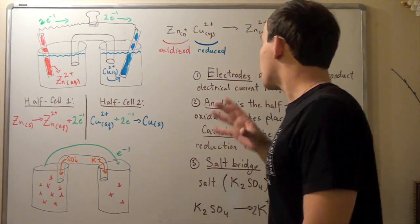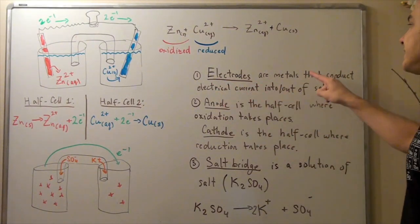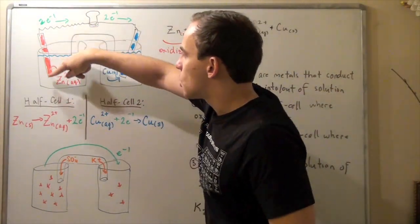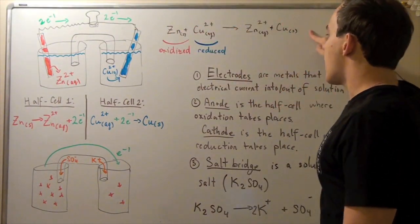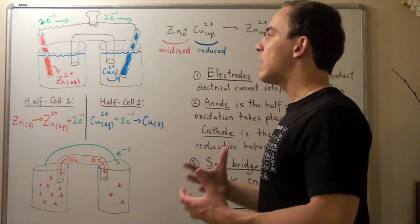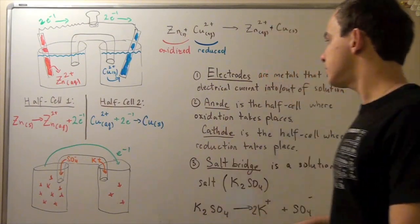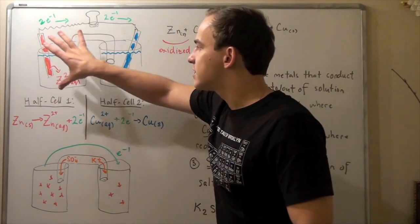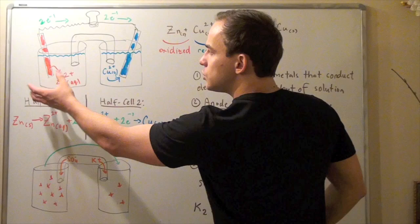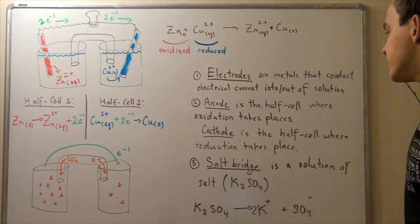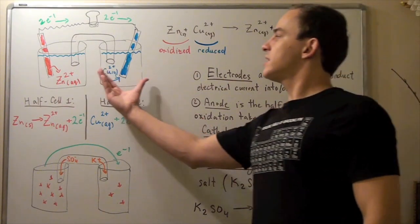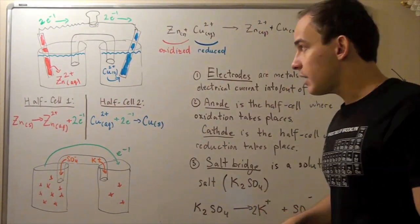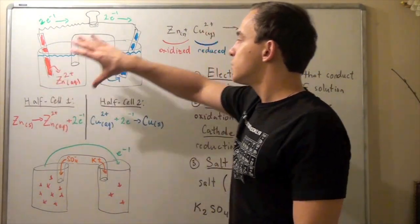Now let's look at a few terms we need to know. Electrodes are metals that conduct electrical current into or out of the solution. So our zinc solid and copper solid are our electrodes because they're metals that allow electrons to flow in or out. The anode is defined to be the half cell where oxidation takes place — it includes beaker one, the aqueous solution, as well as the electrode found in beaker one. The cathode is defined to be the half cell where reduction takes place — it includes the aqueous solution, the beaker, as well as the electrode found in beaker two. Electrons travel from our anode to our cathode.